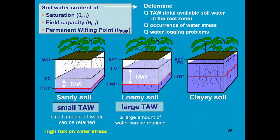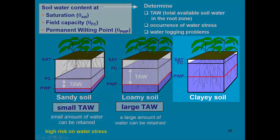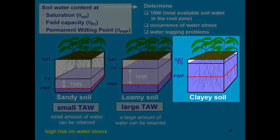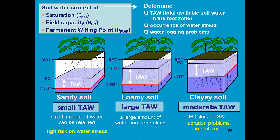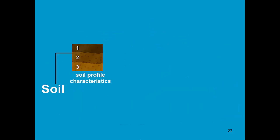On a loamy soil with high field capacity and a relatively low permanent wilting point, we can store a lot of water in the root zone. In a clay soil, field capacity and permanent wilting point are relatively large, so we have a moderate tau. Since field capacity is close to saturation, after heavy rainfall or irrigation the water content might be slightly above field capacity, causing aeration problems in the root zone. To characterize the soil in AquaCrop, we need to specify the soil water content at field capacity, wilting point, and saturation.